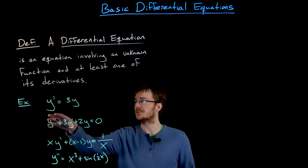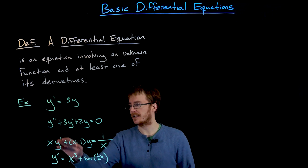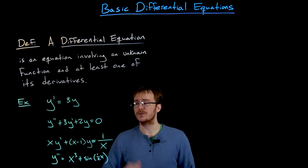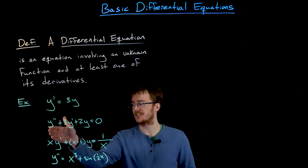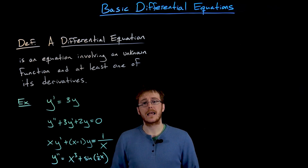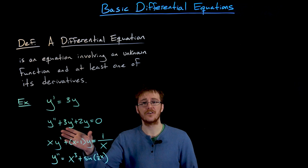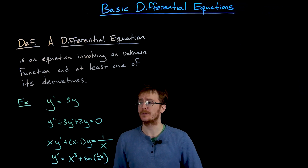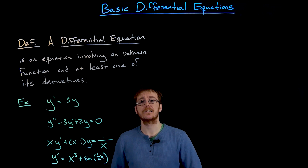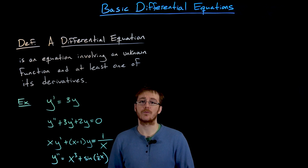In our first example, this differential equation says y prime, or the first derivative of y, is equal to three times y itself. The second equation says y double prime plus three times y prime plus two times y equals zero. The third example says xy prime plus the quantity (x minus one) times y is equal to 1/x, so the equation can also involve other functions of x — or t, which is common for time. That last example says y double prime is equal to x cubed plus sine of one-half x.